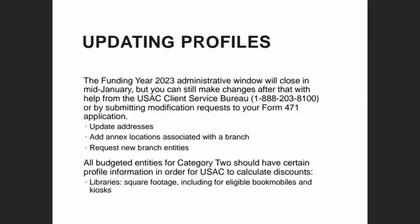You can update addresses, square footage, and annex locations during the administrative window. This is also the time to request new entity numbers — if you have a new location opening during funding year 2023, you can provide the name and location information and USAC will create a new entity number linked to your library system. The administrative window closes a day before the application filing window begins — probably around January 10th or 11th.